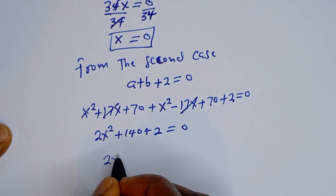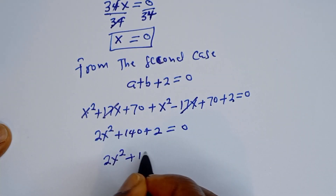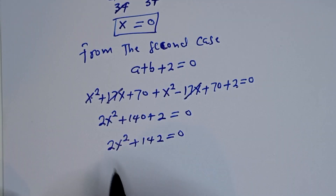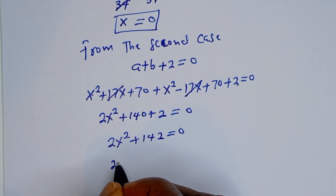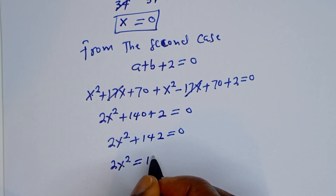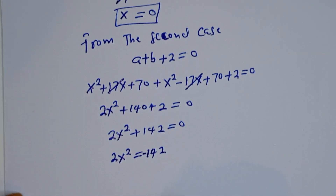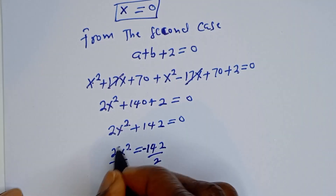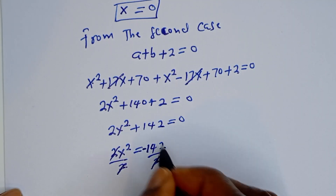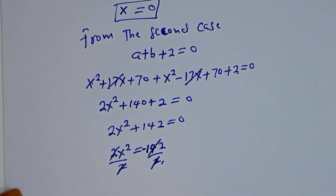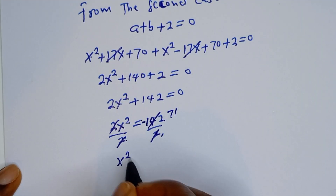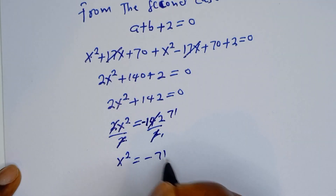Here we have 2S squared plus 142 equals 0. So 2S squared equals minus 142. Dividing both sides by 2, S squared equals minus 71.